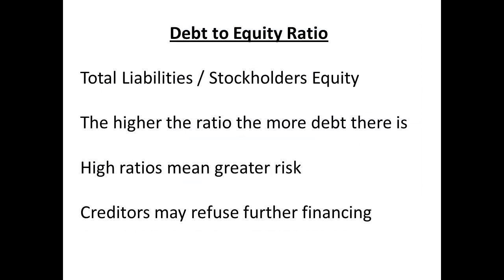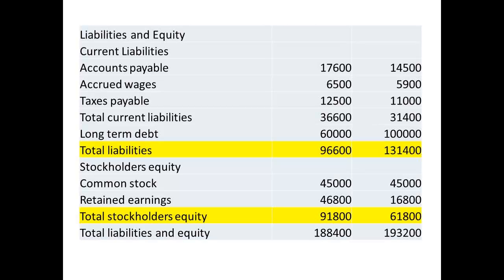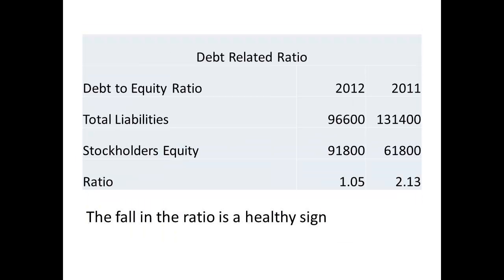The debt to equity ratio is obtained by dividing the total liabilities by the stockholders' equity. The higher this ratio, the greater the debt is. High ratios mean greater risks, and the company may find it difficult to obtain further financing if this ratio is high. The figures are obtained from the balance sheets. The figure has fallen from 2.13 in 2011 to 1.05 in 2012. This fall in the ratio can be considered as a healthy sign.